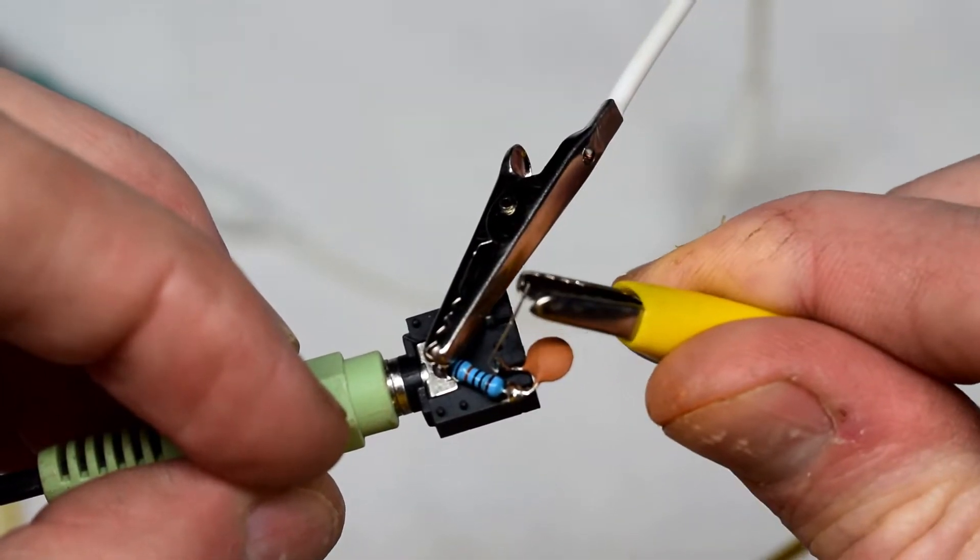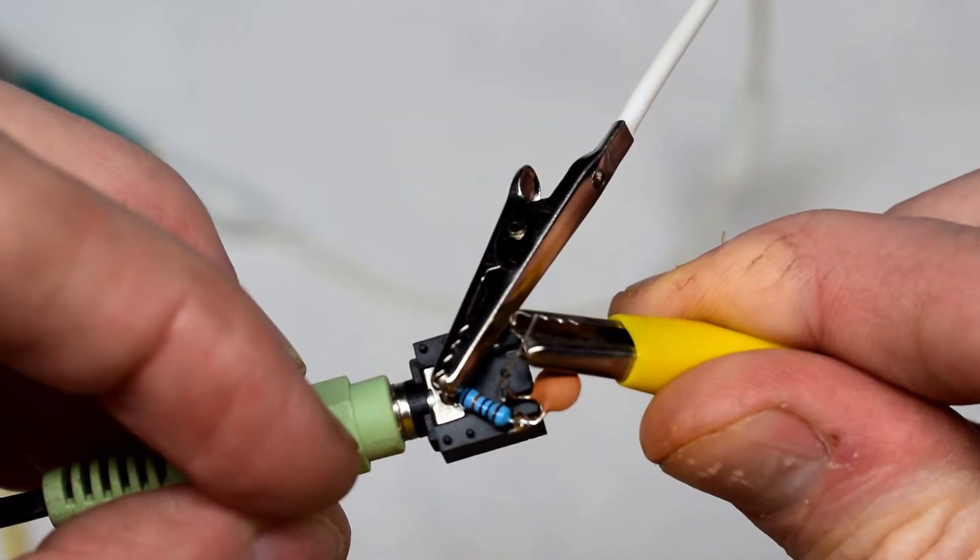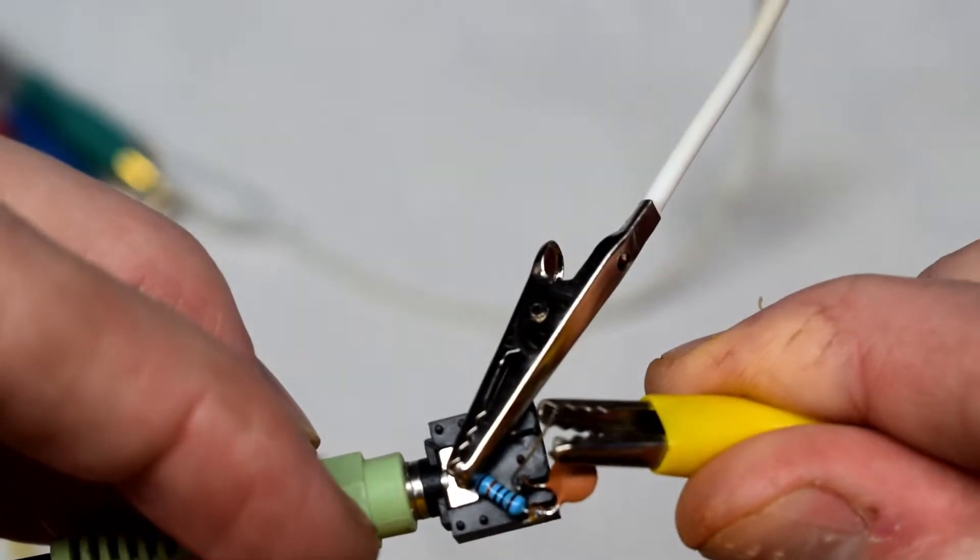When I connect to that lead of the capacitor it passes the audio signal, but if I connect a DC voltage it will stop the DC voltage from going to my speakers.